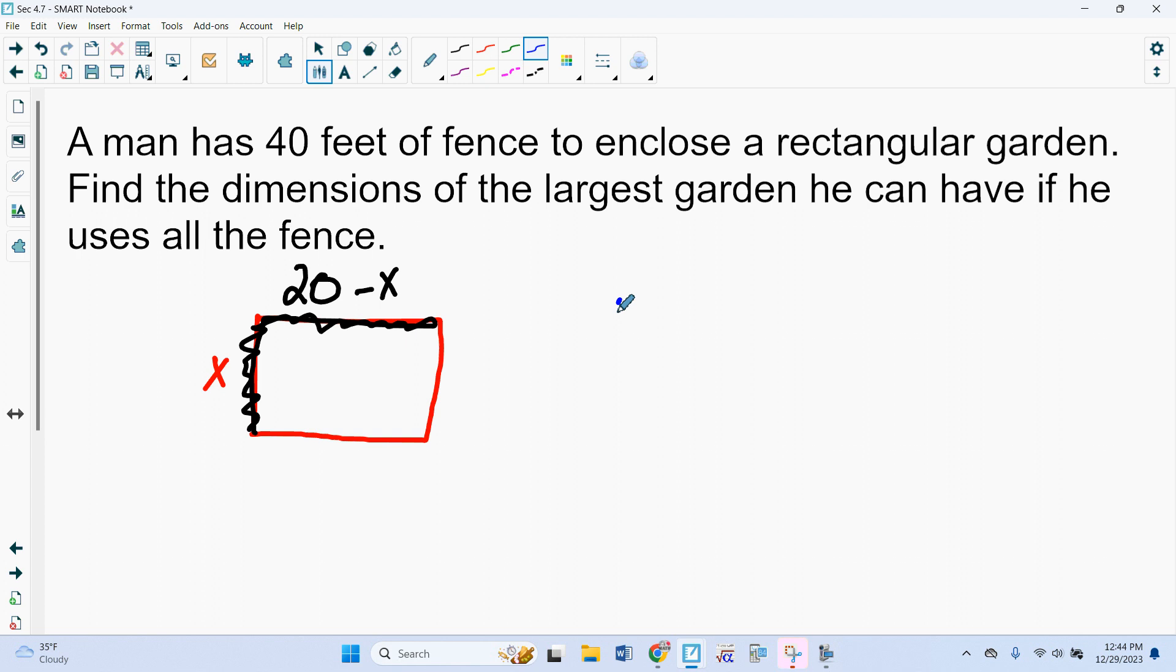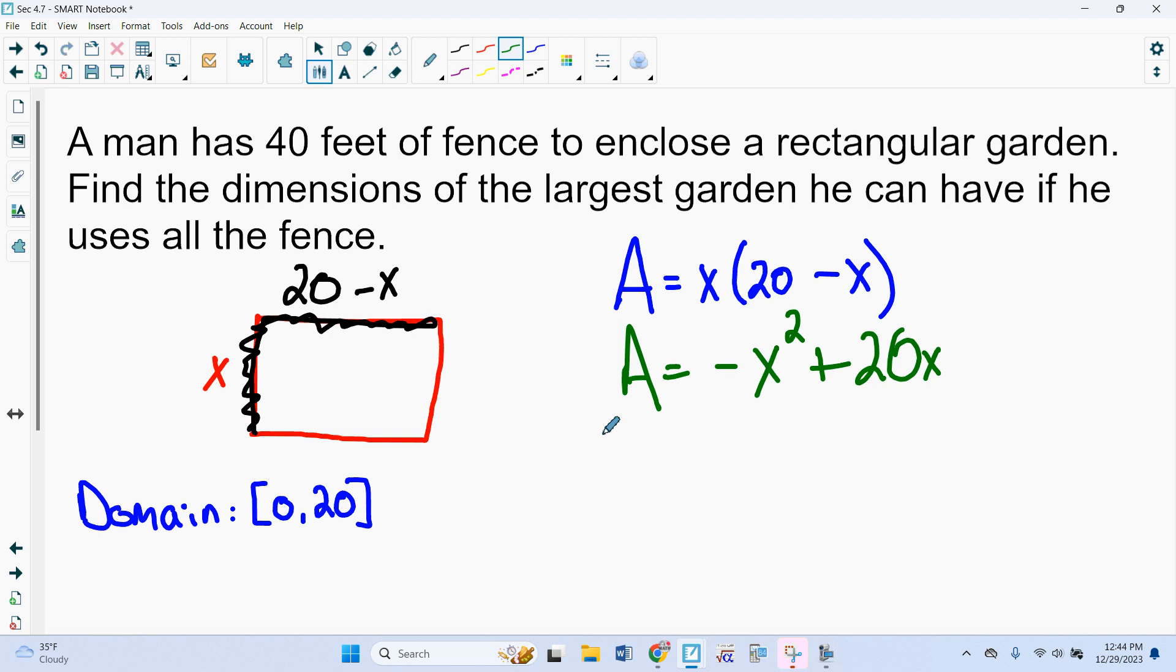So we know our area is x times 20 minus x. Now I do want to mention we know here our domain, because we are dealing with a real-world problem, has to be from 0 to 20. And we could say it can't be 0, it can't be 20, because then one side of the rectangle would be 0. So if I distribute this, I get to there. Now if I take my derivative, I get negative 2x plus 20. And that tells me that my critical point is 10.